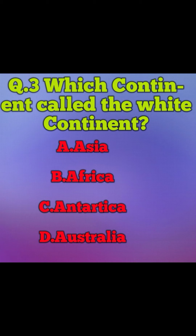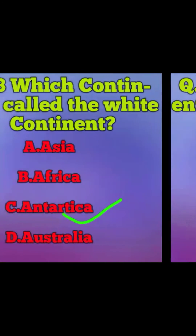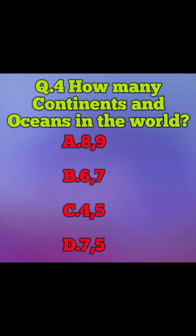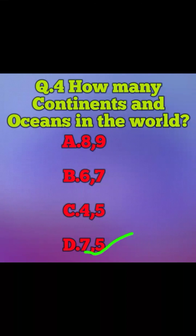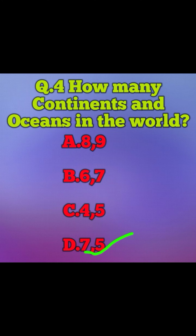Your time's up and the correct answer is C) Antarctica. Fourth question: how many continents and oceans are there in the world? A) Eight continents, nine oceans, B) Six continents, seven oceans, C) Four continents, five oceans, D) Seven continents, five oceans. Your time starts now. Your time's up and the correct answer is D) seven continents and five oceans.